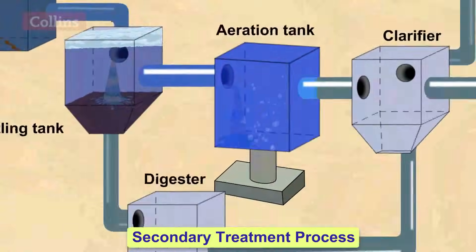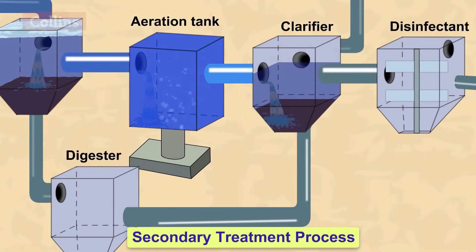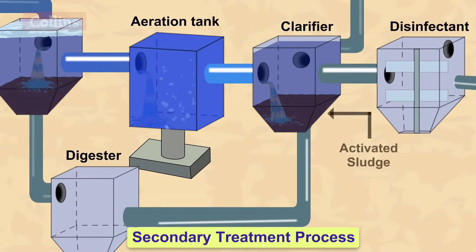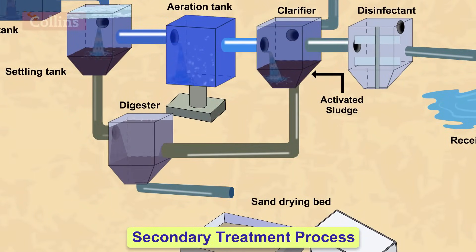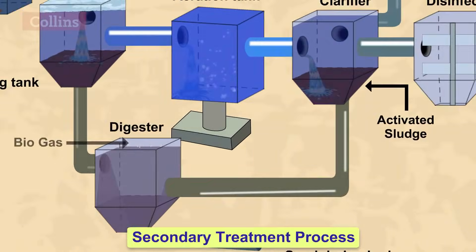The mixture then flows from the aeration tank into the clarifier where activated sludge settles out by gravity. The activated sludge so produced, along with the sludge produced in the primary process, is transferred to the digester where it is decomposed by anaerobic bacteria. Biogas is produced in this process, which can be used as fuel or can be used to produce electricity.